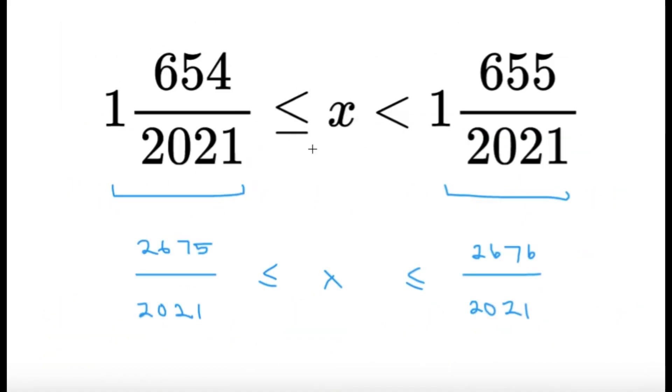And there we have it. Now, if you want the answer in terms of mixed fractions, the mixed numbers, you can also write x to be between 2675, sorry, this should be a less than symbol. So x is greater or equal to 2675 over 2021, but less than 2676 divided by 2021. And either of these two will be our final answer. Hopefully, you guys learned something new from this video, and I'll see you in the next one. Bye-bye!